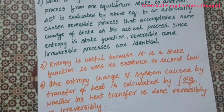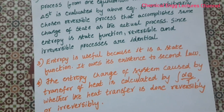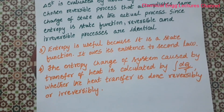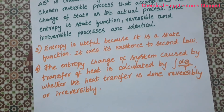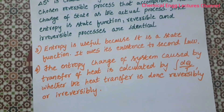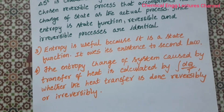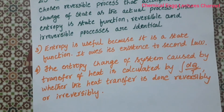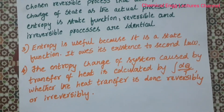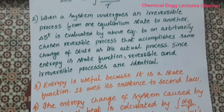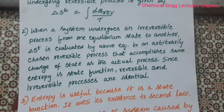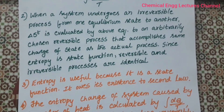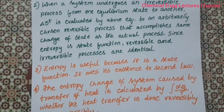Entropy is useful because it is a state function, and it owes its existence to the second law. The entropy change of the system caused by heat transfer is calculated by the integral of DQ by T. Whether the heat transfer is done reversibly or irreversibly, we evaluate the entropy change using integral DQ by T. In summary: entropy is evaluated with the equation DQ reversible by T; entropy is a state function; and entropy change is the same for reversible and irreversible processes.